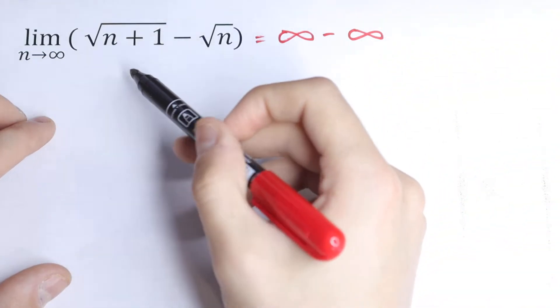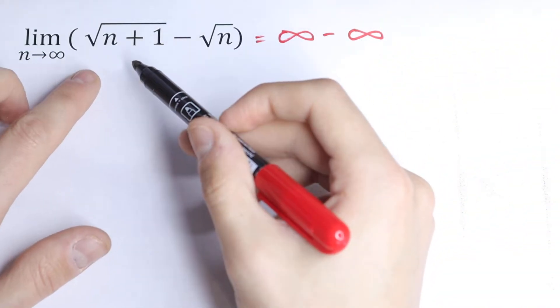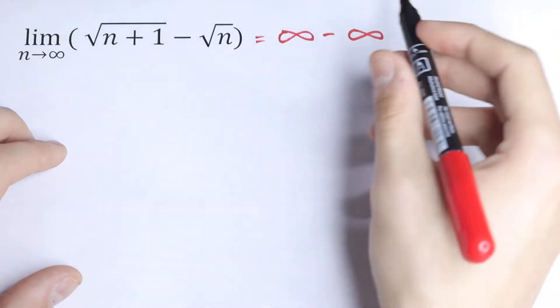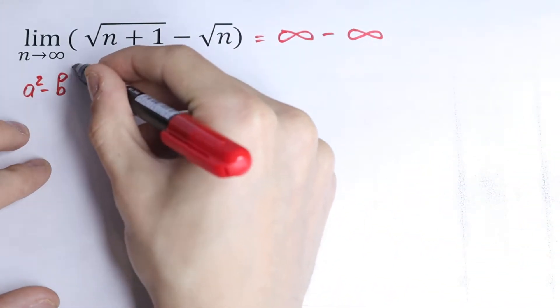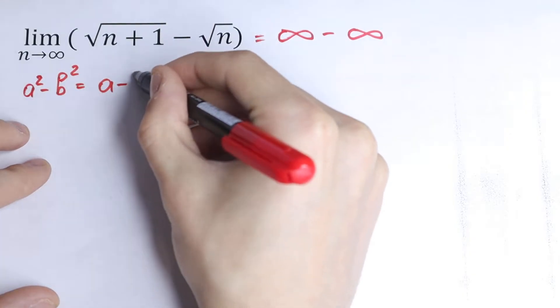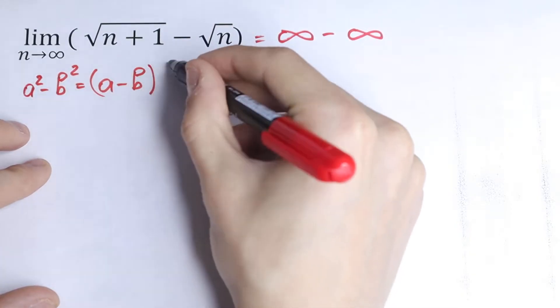What are we going to do in our case? I want to suggest you a little trick right here. So first of all, we need to know the formula: a squared minus b squared equals (a minus b) times (a plus b).